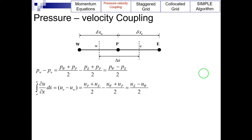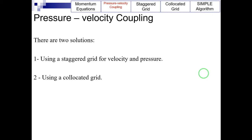This is exactly the so-called checkerboard problem. There are two solutions to this problem. The first is using a staggered grid for velocity, where velocity and pressure values are stored in different nodes. The second is using a collocated grid together with the Rhie-Chow interpolation technique.